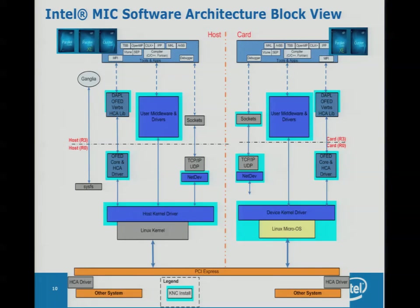If there's a library or interface that exists in a normal distribution, we give you all the tools to compile it and either link it into the kernel or as user-mode libraries. You can extend or limit the environment as needed. We actually have a DAPL/OFED layer capability right on the device, and our MPI is built on top of that. Sockets work — most of the programming models you're used to, both high and low level.